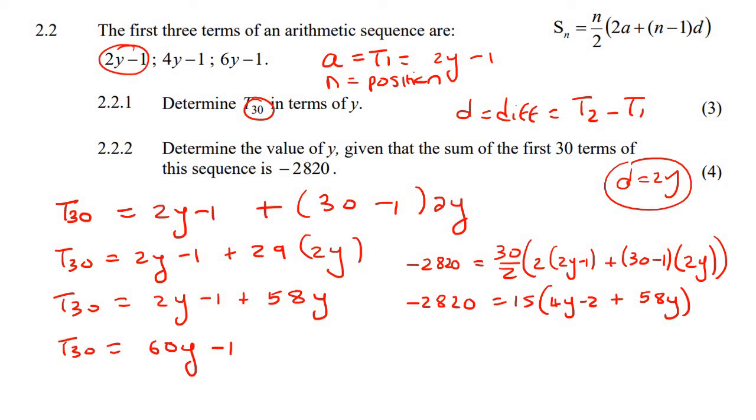And then there's that y. And then we can just simplify a little bit more by saying 15. And then 4y plus 58y is 62y minus 2.